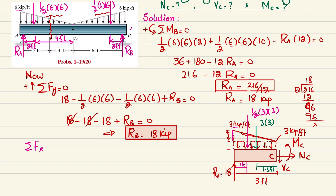Applying the equilibrium condition — sum of all forces along the X direction equals zero, with rightward forces positive — the only force in this direction is NC and there is no other force, so NC equals zero.